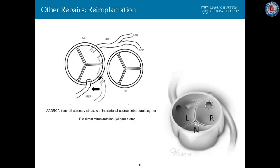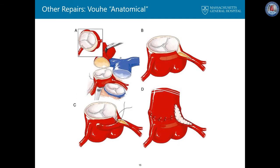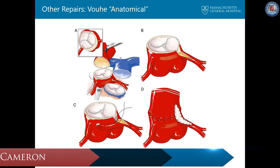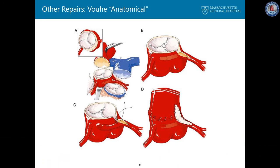Reimplantation involves detaching the anomalous coronary and moving it to its correct sinus. This can be a difficult operation when the coronary is small and delicate and the aorta is thick. Pascal Vohe's anatomic repair involves transecting the aorta and the pulmonary artery, making an incision down into the appropriate sinus and out onto the left main coronary artery, and placing a pericardial patch along this. This is an anatomic repair in that the coronary is left attached to the aorta, and this large patch creates a very large ostium for the coronary artery.